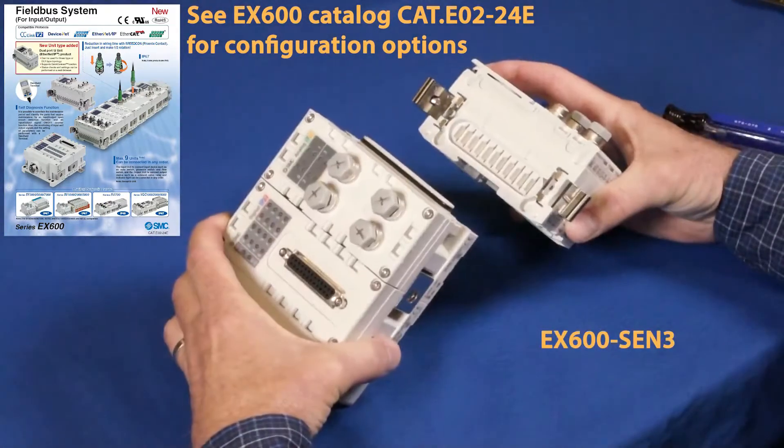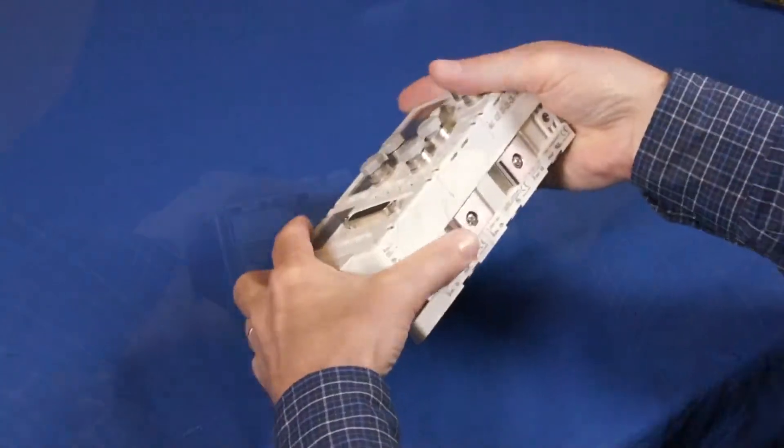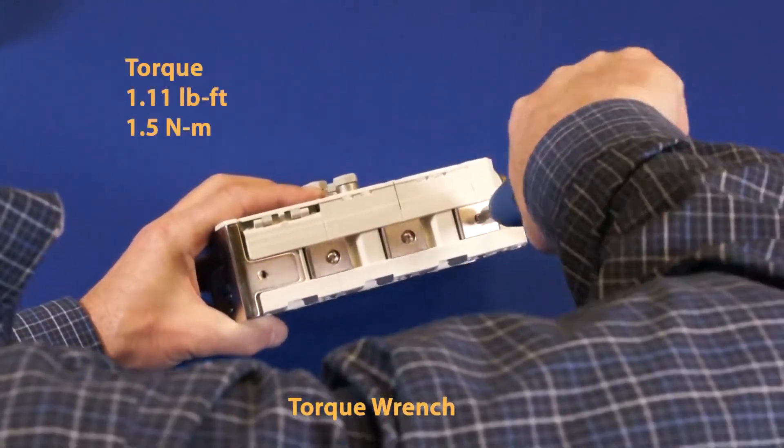After the I.O., add the serial interface unit to the far right. Tighten the side brackets to the torque shown.